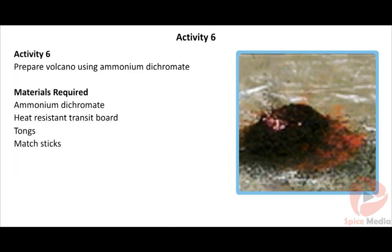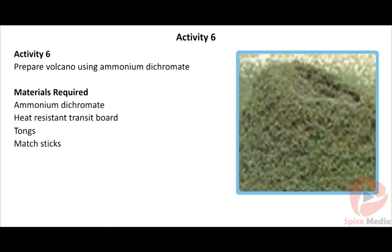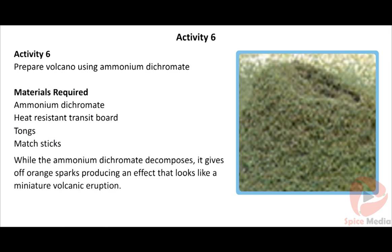Activity 6: Prepare a volcano using ammonium dichromate. Materials required: ammonium dichromate, heat-resistant transit board, tongs, and matchsticks. Procedure: Put a small amount of ammonium dichromate on the heat-resistant board. Use tongs to hold a matchstick to light the ammonium dichromate. While it decomposes, it gives off orange sparks and throws green chromium(III) oxide crystals into the air, producing an effect that looks like a miniature volcanic eruption.